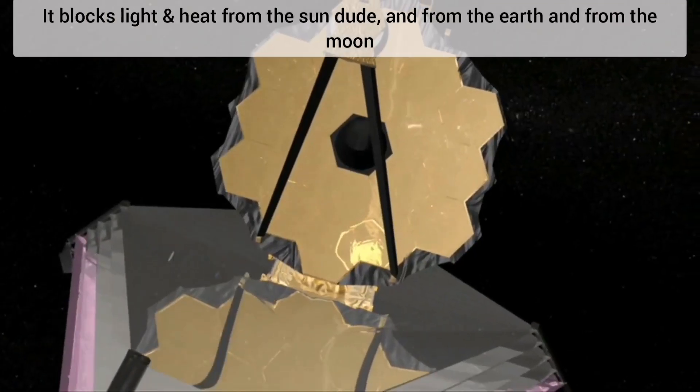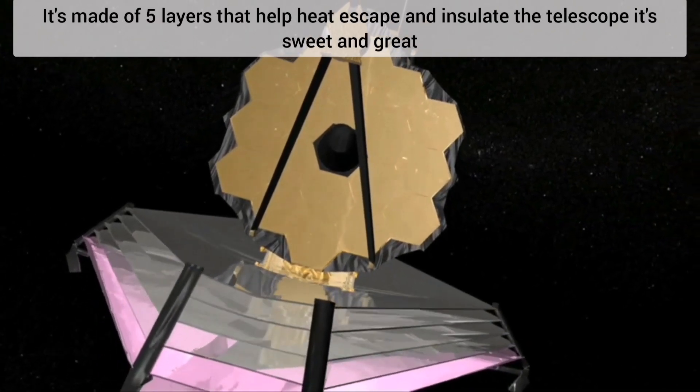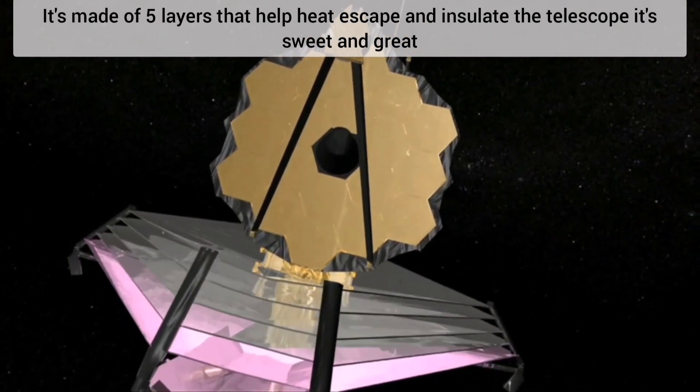It blocks light and heat from the sun, dude, and from the earth, and from the moon. It's made of five layers that help heat escape and insulate the telescope. It's sweet and great.